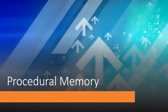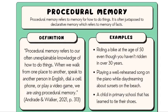Procedural memory is a type of implicit memory — it's simply memory of how to do things. It's often juxtaposed to declarative memory, which refers to memory of facts. We do know how to do things semantically, which is a type of declarative memory, but our body performs them without our thinking. For example, riding a bike: you maybe didn't ride for 30 years and you still know how. That's procedural memory — your body remembers.